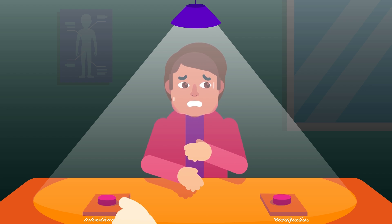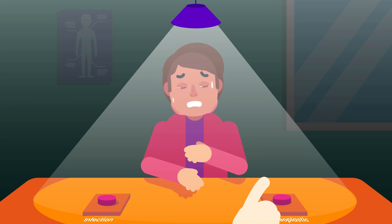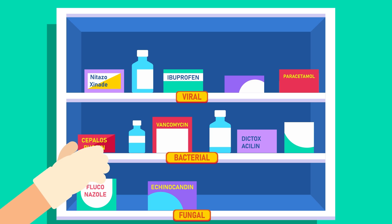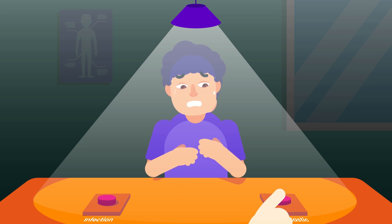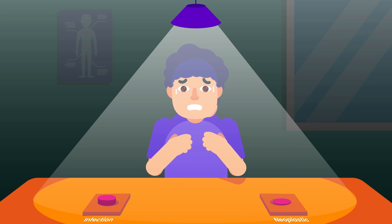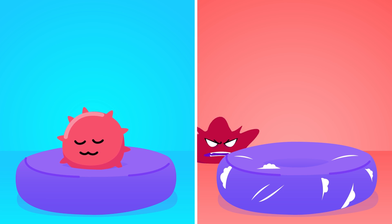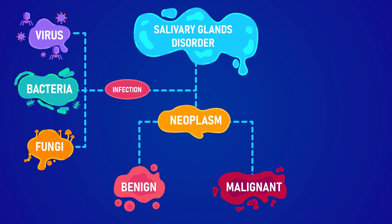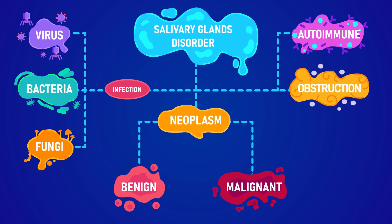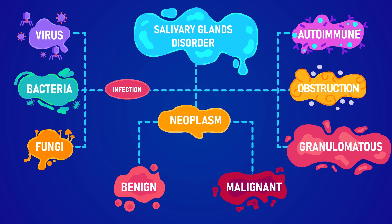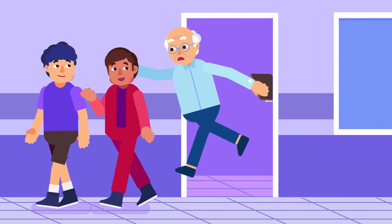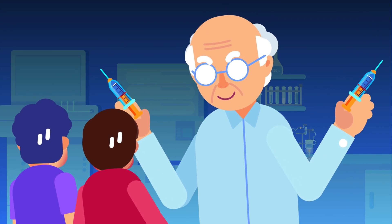Based on the patient's history and examinations, the clinician conducts a differential diagnosis. In cases of salivary gland swelling or mass caused by infection, doctors will determine whether it is of viral, bacterial, or fungal origin and adjust treatment accordingly. When it is a neoplasm or tumor, the treatment will be entirely different — with the further question of whether it is benign or cancerous. Salivary gland disorders are also caused by other conditions including autoimmune diseases, salivary duct pathologies such as salivary stones, and granulomatous disorders. More necessary tests will be discussed in the next video.